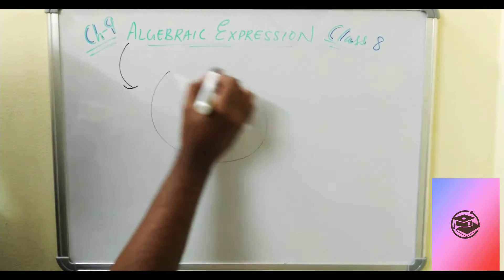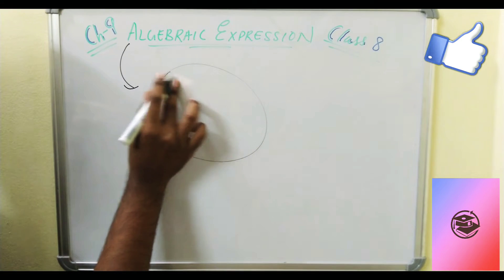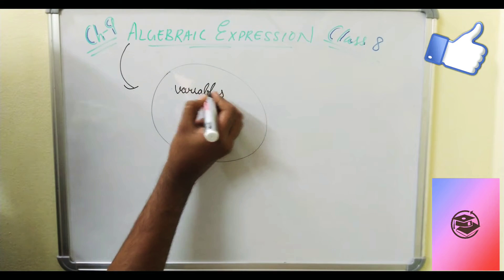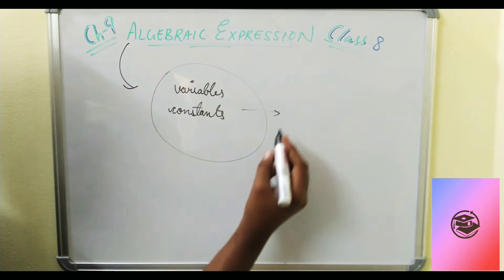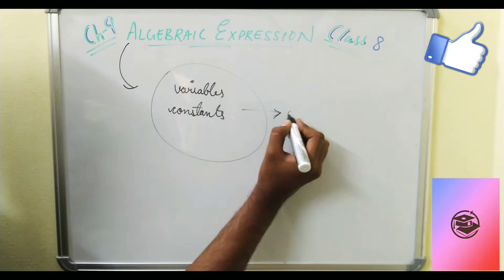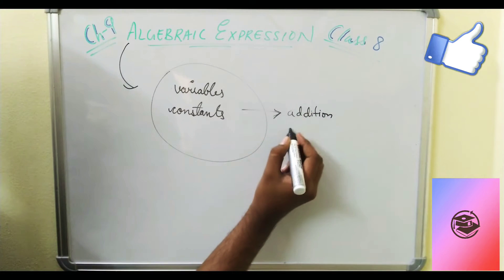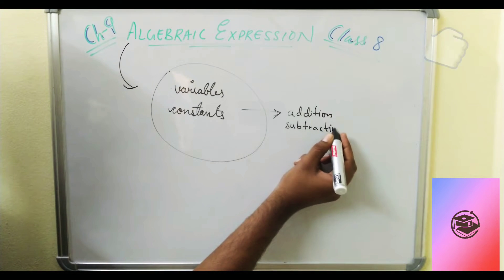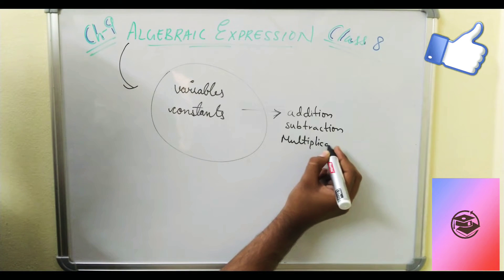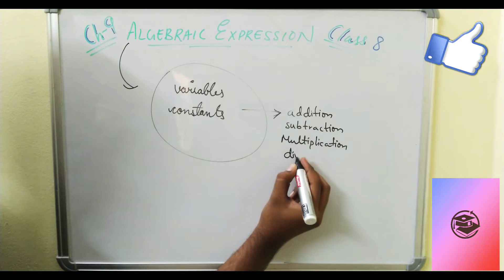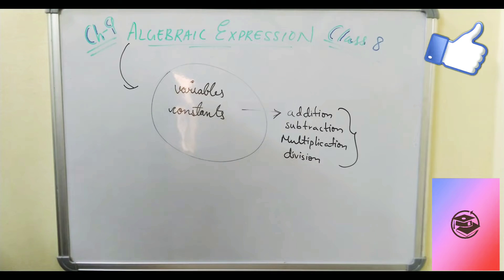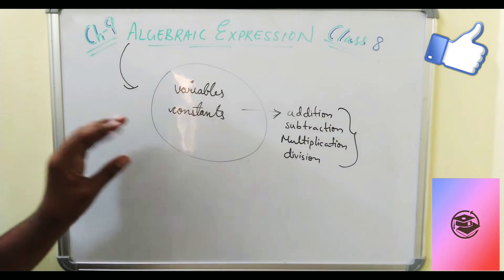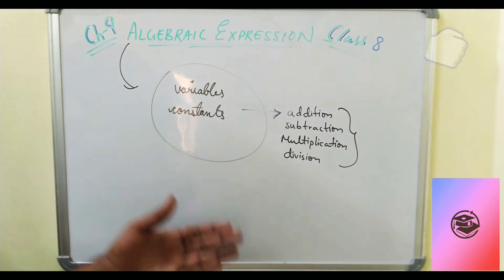So what do you understand by the word algebraic expression? It is nothing but a collection of variables and constants, combined with some algebraic operations — addition, subtraction, multiplication, or division. These are all operations. An algebraic expression is the combination of variables and constants joined together with these operations: plus, minus, multiplication, or division.